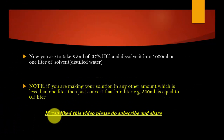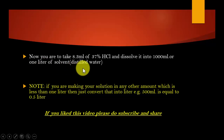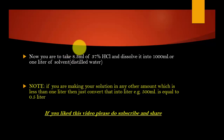You have to take 8.3 mL of the 37% HCl solution and dissolve it in 1000 mL (one liter) of distilled water. If you are not making one liter, you will need to convert: for example, if you are making 500 mL, then 500 mL equals 0.5 liters, and that value goes into your equation. If you liked this video, please subscribe and share it with your friends.